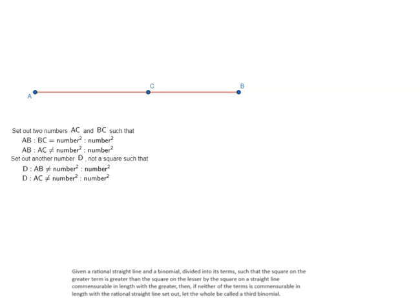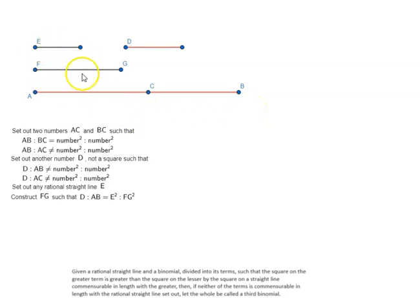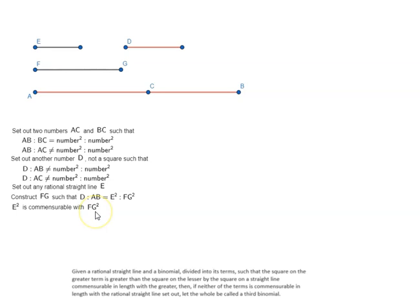Set out any rational straight line E and construct FG such that D is to AB equals E square to FG square. We have to construct FG in such a way that it satisfies this proportionality. Here D is to AB as E square is to FG square, which means E square is commensurable with FG square. Why? Because E square is to FG square equals a number to a number — D and AB are both numbers. So we can say E square is commensurable with FG square.